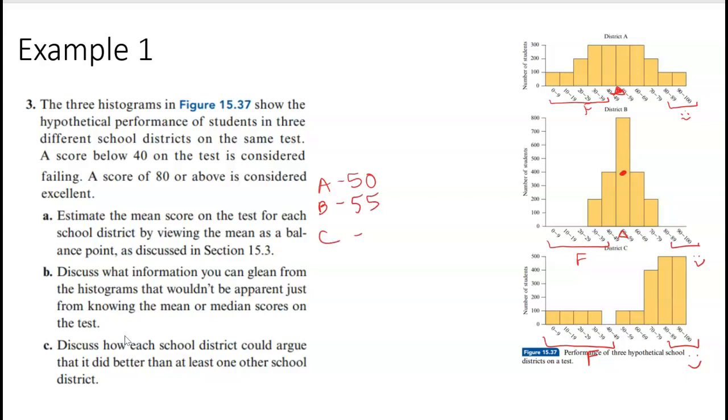And then C, it looks like it's skewed over here to the left. So we're going to want to keep our balance more over here. Maybe it would be like this - kind of all those would add up and balance those two out. So maybe, maybe even right there, maybe like 70, 75.